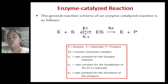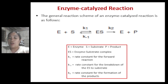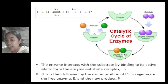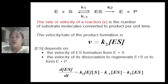K2 is the rate constant for the formation of products. The enzyme interacts with the substrate by bonding to its active site to form the enzyme-substrate complex, denoted as ES. This is then followed by the decomposition of the ES complex to regenerate the free enzyme and the new product. This is the catalytic cycle of the enzyme.